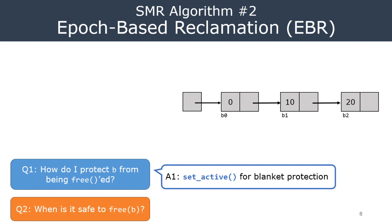In order to answer the first question — in order to protect B — the thread calls what is called the setActive function in EBR. This setActive function protects all the pointers that the thread is going to access from that point on. In that sense, it is a blanket protection: it is not protecting a single pointer, but instead protecting all the pointers it is going to use.